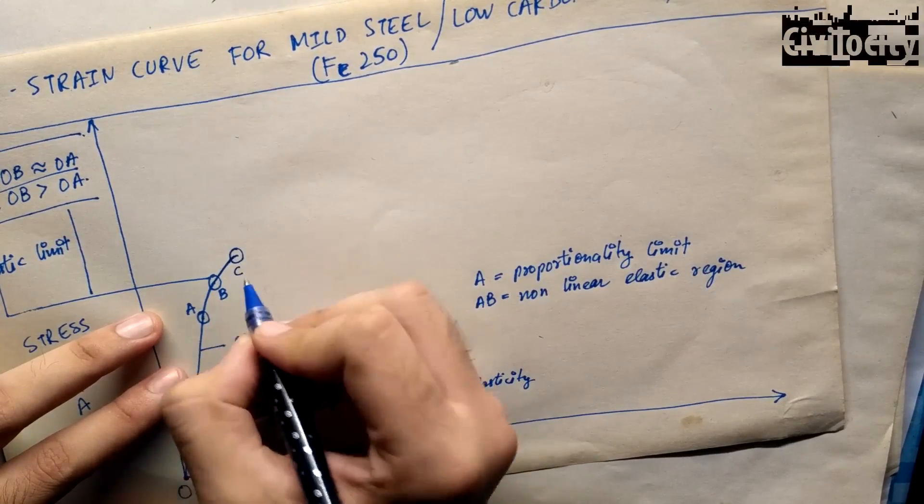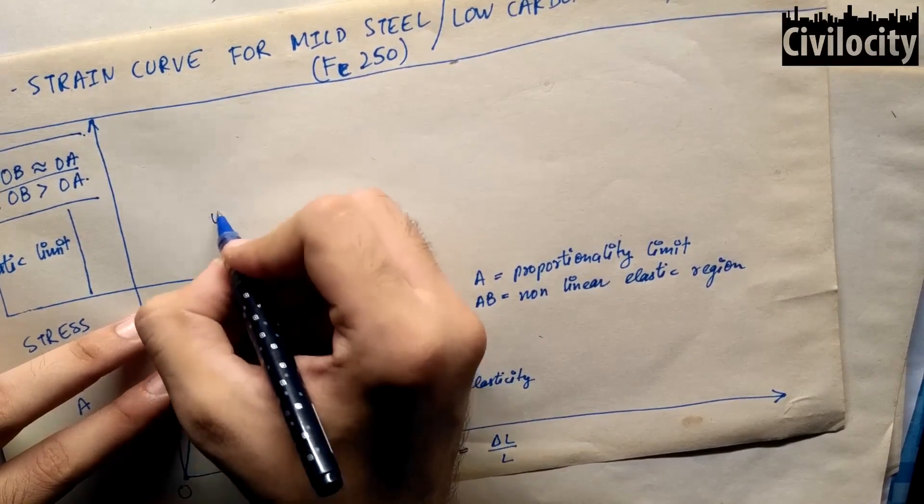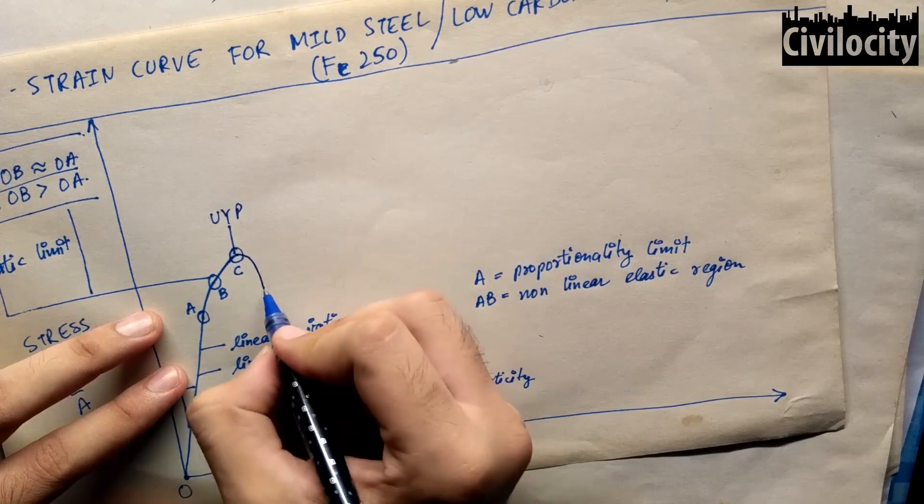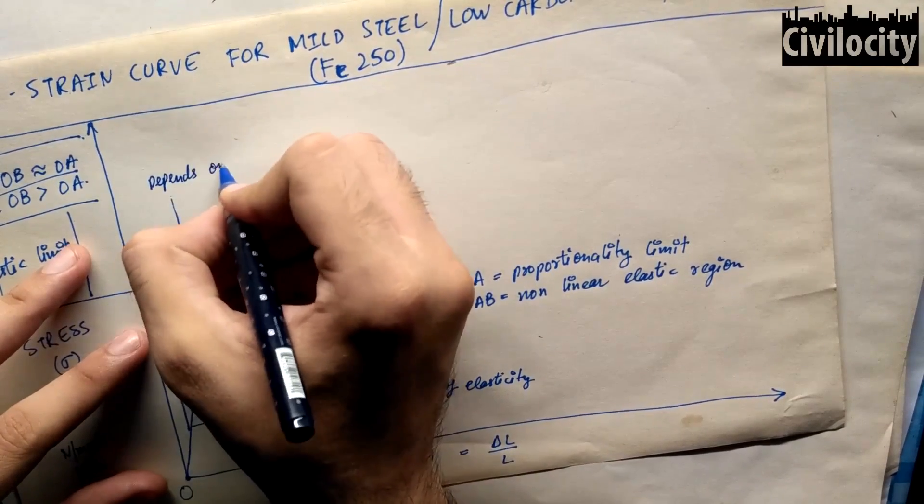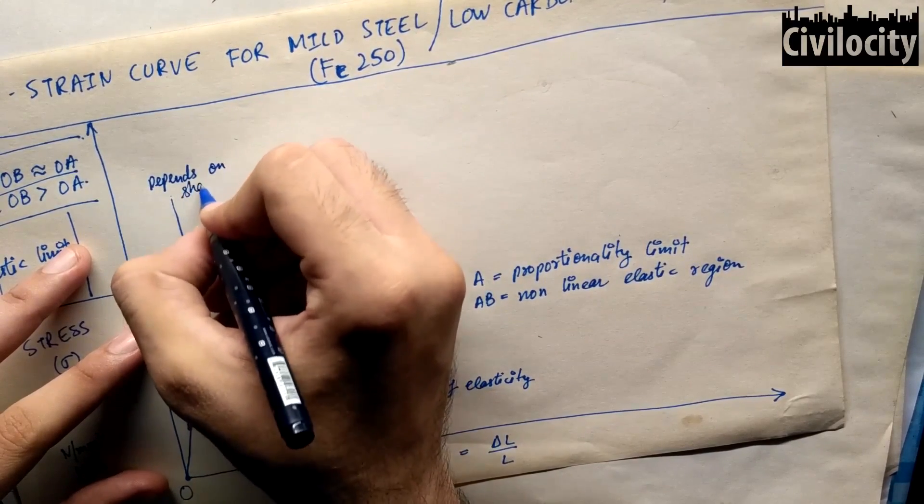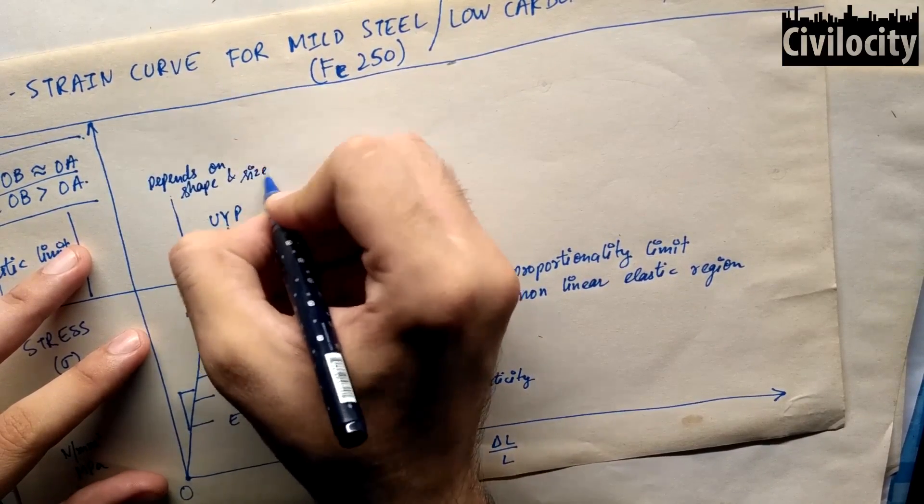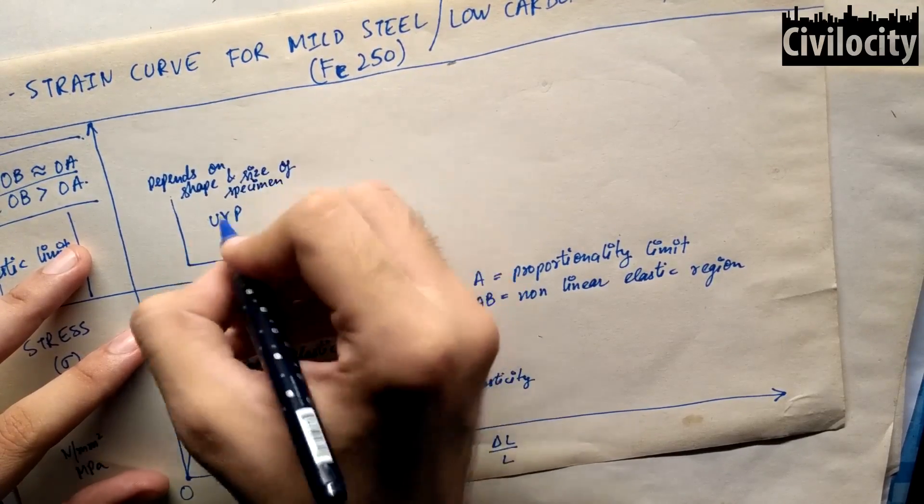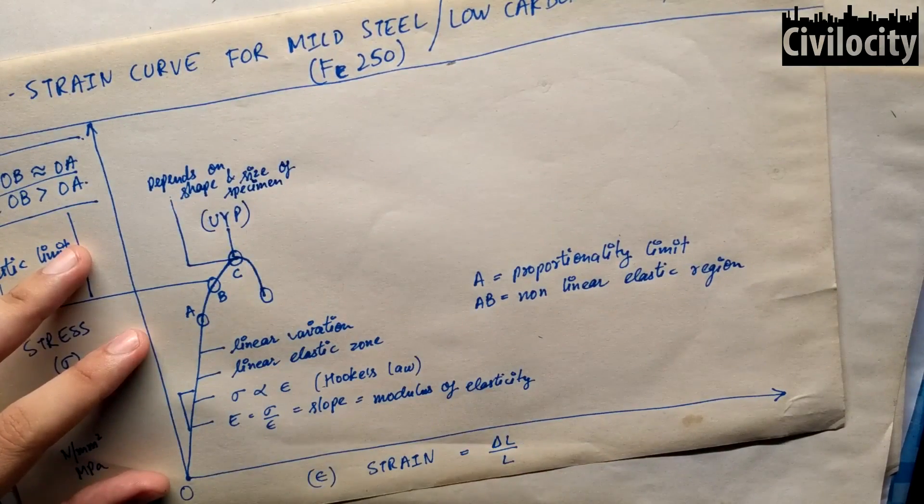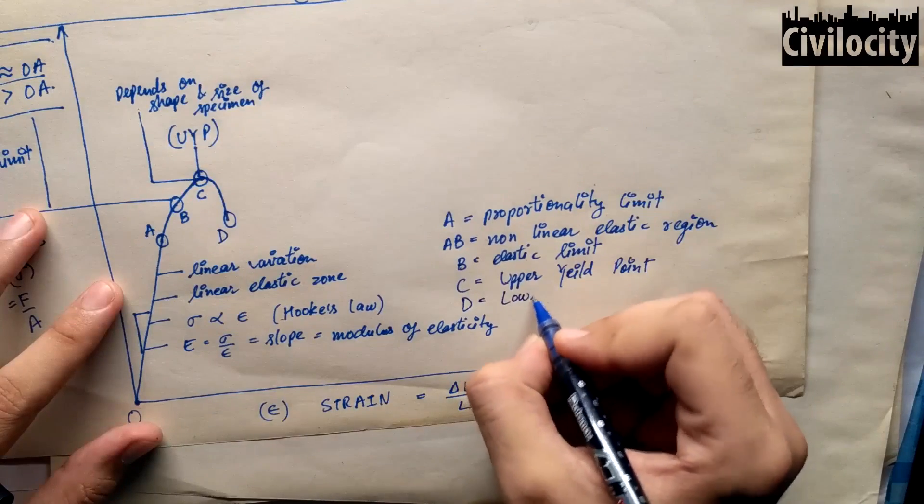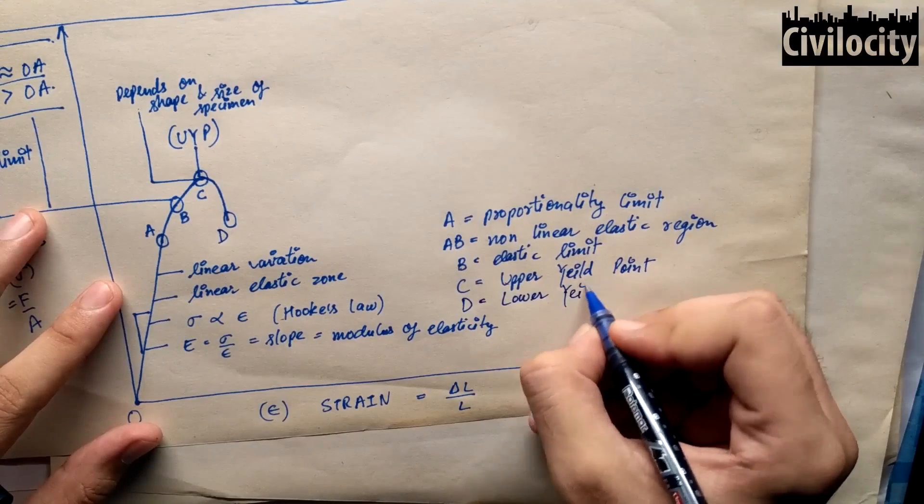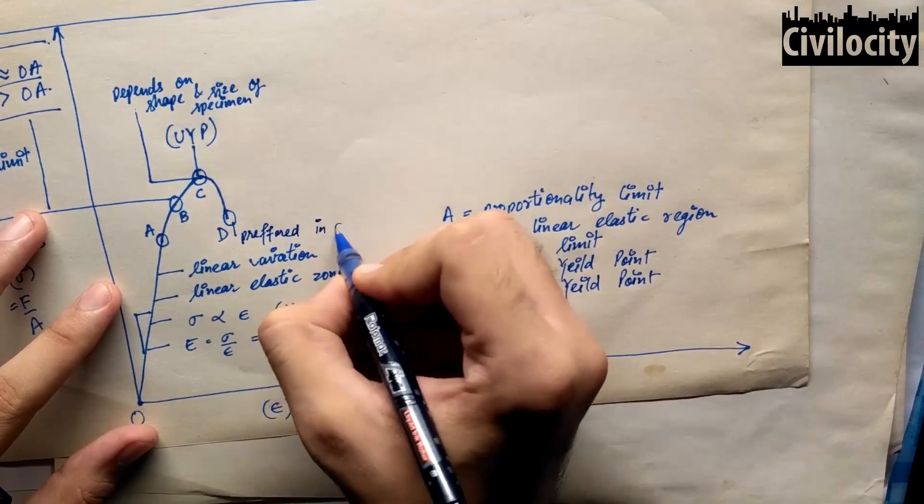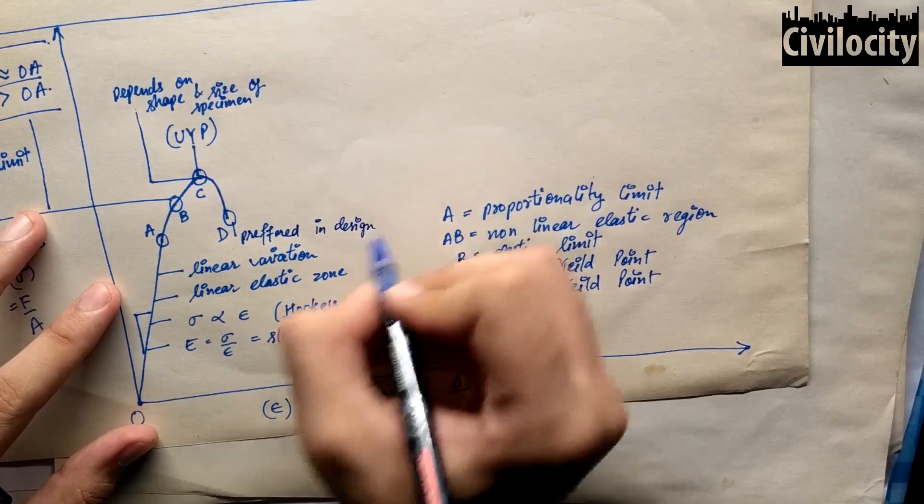On application of further load, the stress values increase and this graph reaches up to point C, called the upper yield point. After this point the resistance of the material suddenly drops down and the material becomes unstable. This depends on the shape or size of the specimen. Since the internal resistance drops down to a certain limit, we name it as point D, called the lower yield point and it is preferred in designing purposes. The stress at this value is taken as design stress for limit state method, working stress method, ultimate load method and plastic theory.